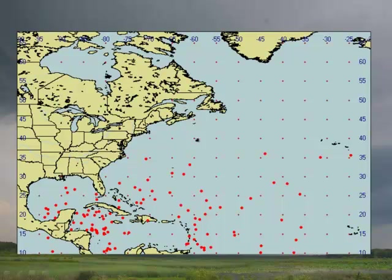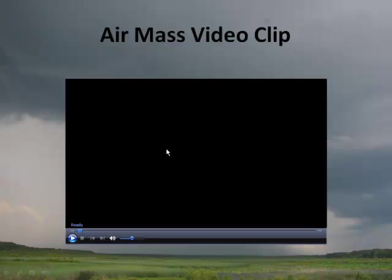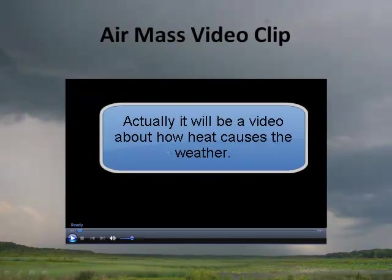We can see that out here — we get our air mass, and it can flow off the coast of the Atlantic Ocean towards the United States. So let's watch a video clip about air masses.